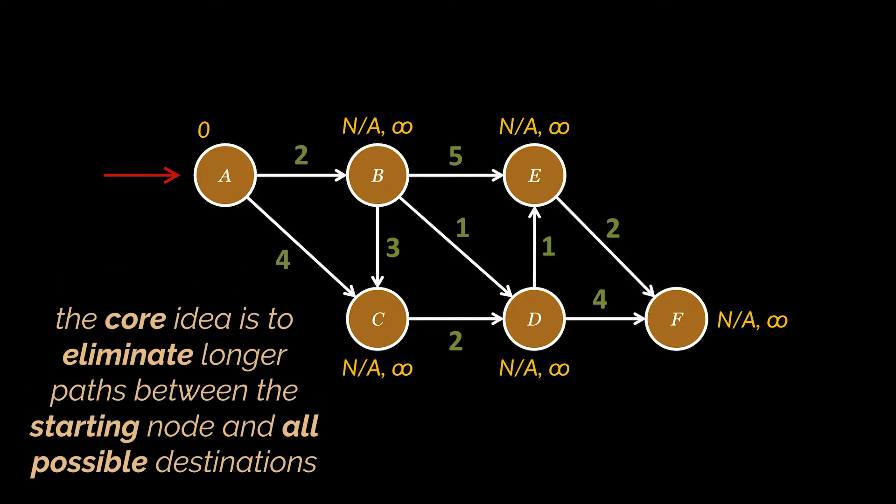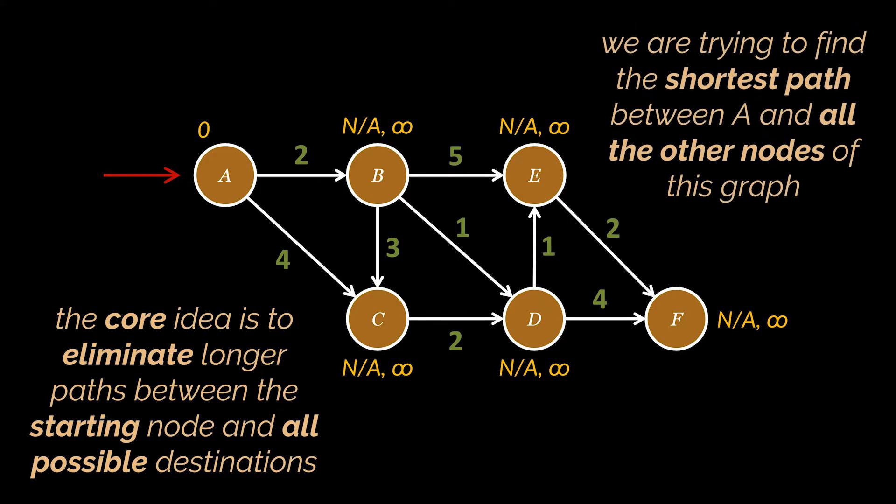Keep in mind that the core idea of this algorithm is to continuously eliminate longer paths between the starting node and all possible destinations. So we are trying to find the shortest path between A and all other nodes of this graph in this example.